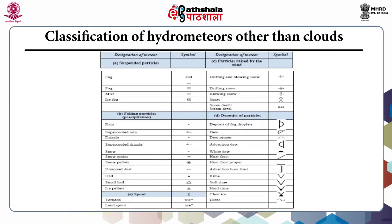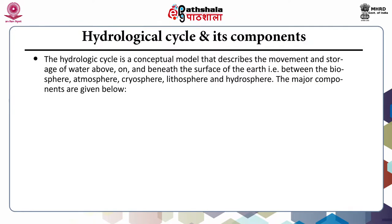In the deposits of particles, you can see the deposit of fog droplets, dew, dew proper, advection dew, white dew, hoar frost, hoar frost proper, advection hoar frost, rain, soft rime, hard rime, clear ice, and glaze. And you can see the corresponding symbols with respect to these meteors.